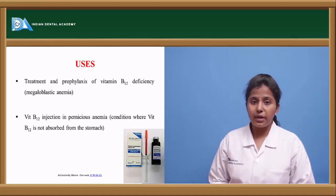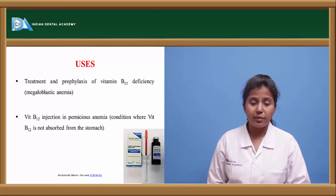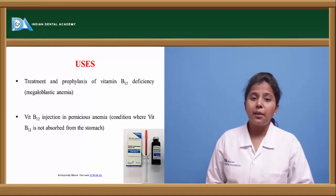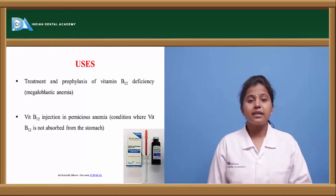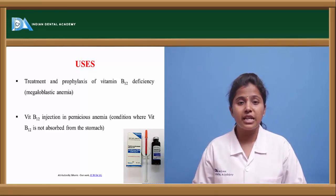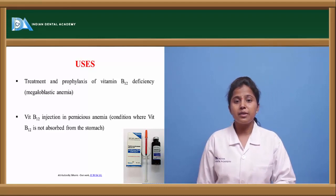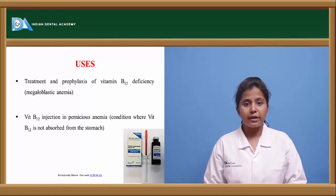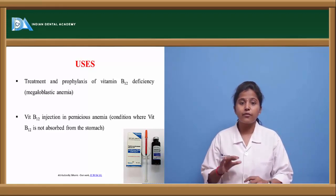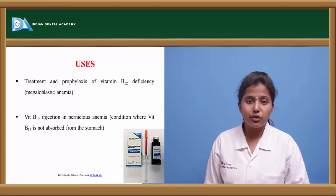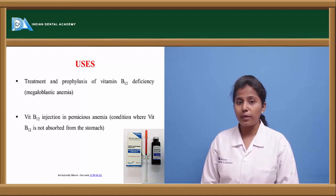The vitamin B12 preparations are mainly used in two types of anemia: megaloblastic anemia and pernicious anemia. Megaloblastic anemia is a condition where there occurs inhibition of DNA synthesis in the production of RBC. RBC is produced in the bone marrow, and when there is inhibition of DNA synthesis required for RBC synthesis, there will be no production of RBC, causing megaloblastic anemia.